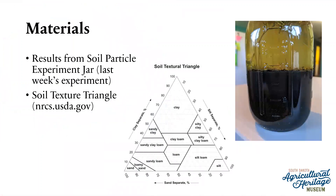The materials you'll need for today are your results from your soil particle experiment jar. As a quick refresher, last week we started with a mason jar filled halfway up with soil, added water to about an inch from the top, shook the jar well to disperse the water through the soil and break up any clumps, and then let the jar sit for up to 24 hours until the layers started to form.